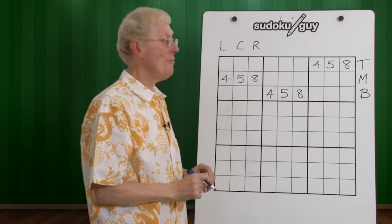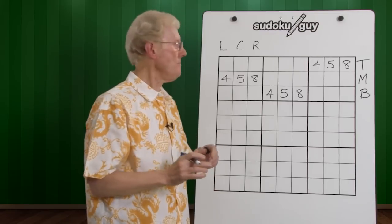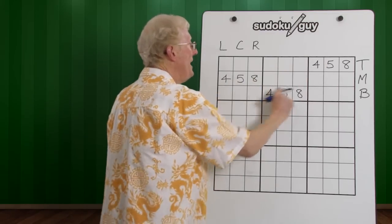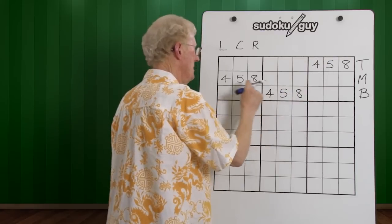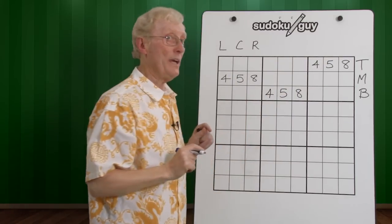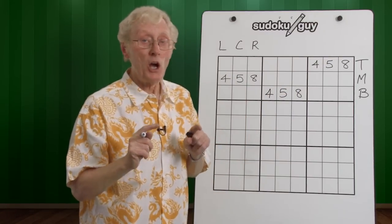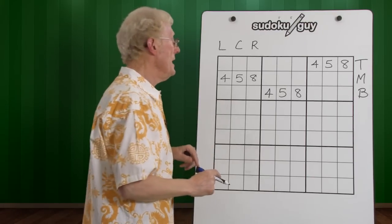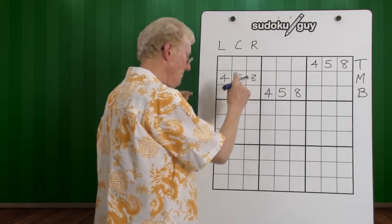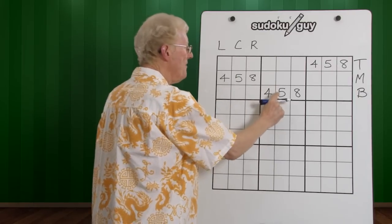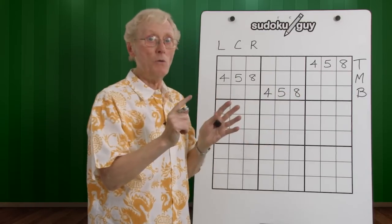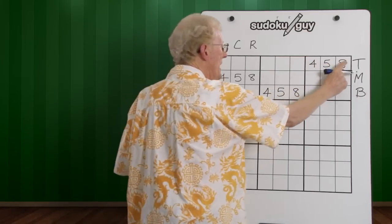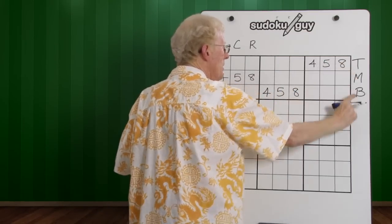So, let me first of all point out that up to now we've been looking at one number, top, bottom, and middle. We now start to realize that we can look at two numbers and even three numbers. For example, if you have a 4, 5, 8 here, and a 4, 5, 8 here, you know, based on the TMB principle, that the 4, 5, and 8 have to be up here in this block.